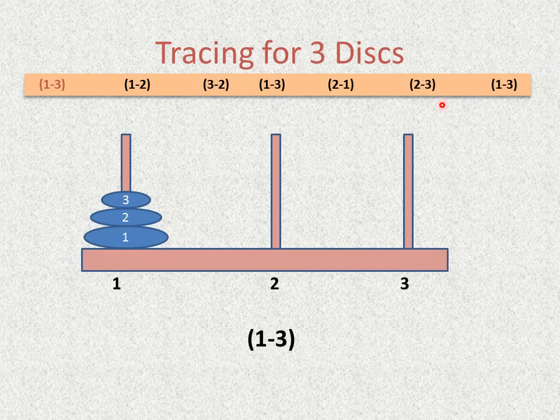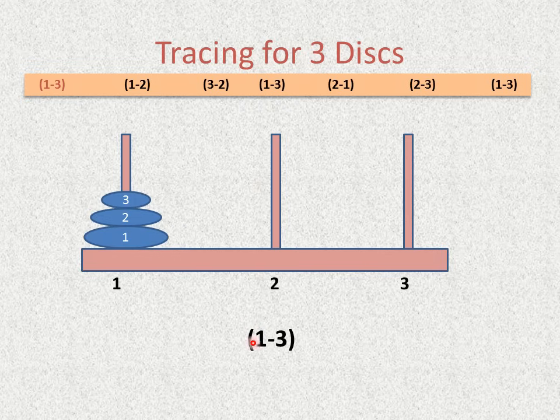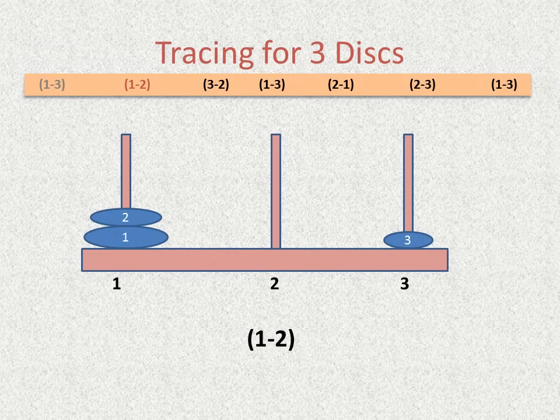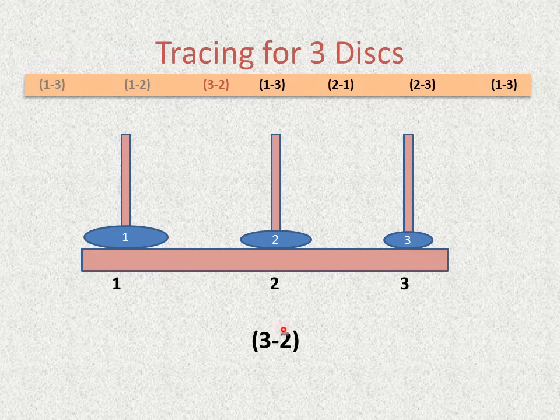Here are the steps or moves. The first move is 1 to 3. So we will move 1 disk from tower 1 to tower 3. This is done. Then second move, tower 1 to tower 2. This is done. Third move, tower 3 to tower 2. This is done.